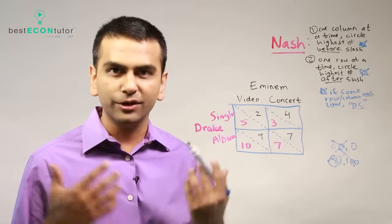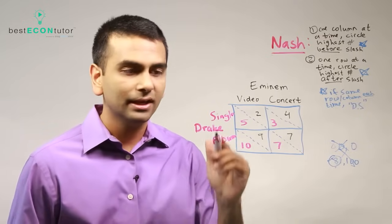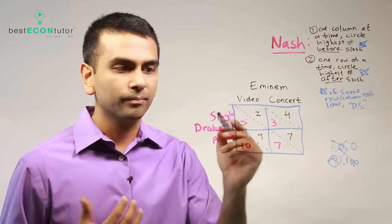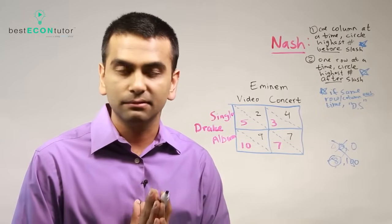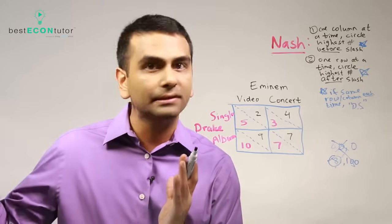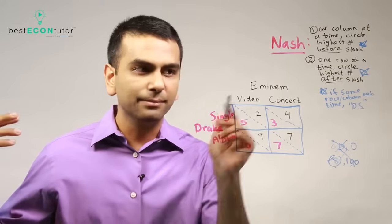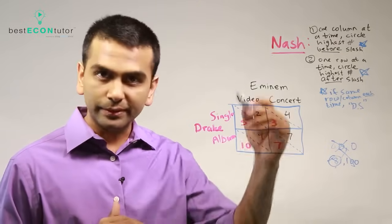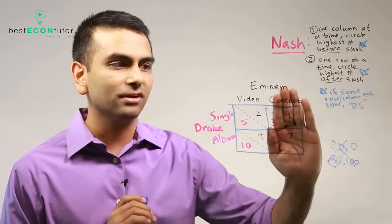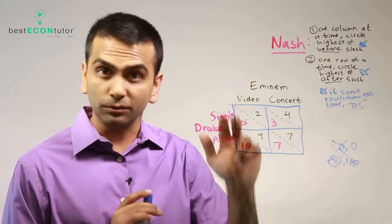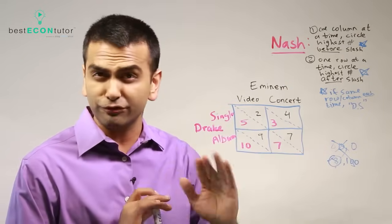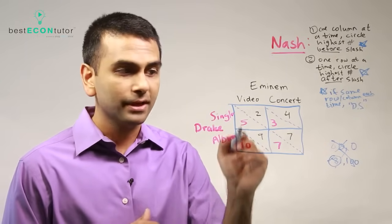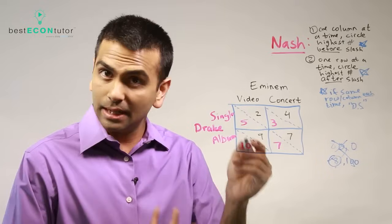Let's say we're on Drake's staff and we have to help him make decisions. We're choosing between single or album. Suppose we have some intel saying that Eminem's doing the video. In that case, it's almost like you've narrowed the world down to just this first column. If Eminem's doing the video for sure, we know that we are either going to get five if we do the single or ten if we do the album. So in that case the album's better - ten beats five.